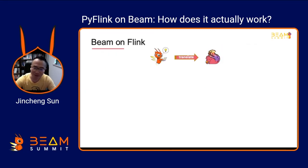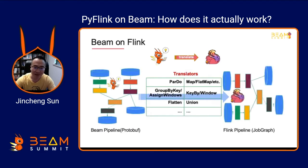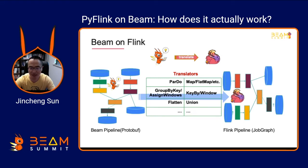So how does Beam transform the job described by Beam API into Flink's job? There are many operators in Beam, such as ParDo, GroupByKey, Flatten, and so on. Those operators have corresponding translators in Beam to translate them into operators with the same semantics in Flink — for example, ParDo will be translated into the RichFlatMap. There will also be corresponding translators for aggregations, windows, and so on.